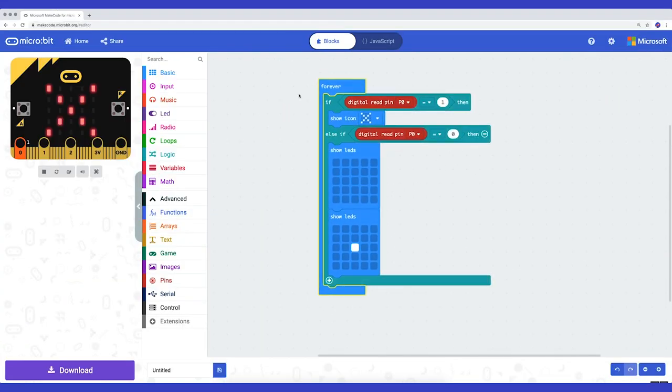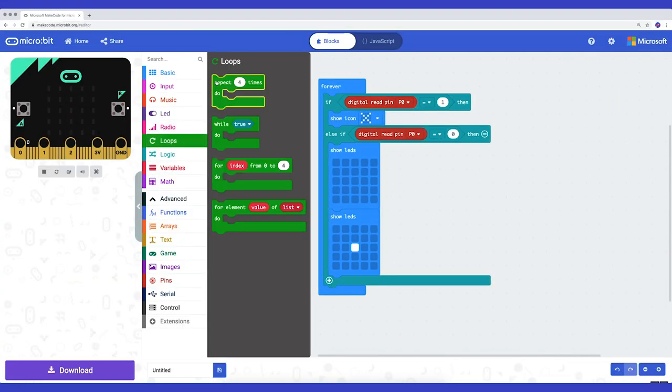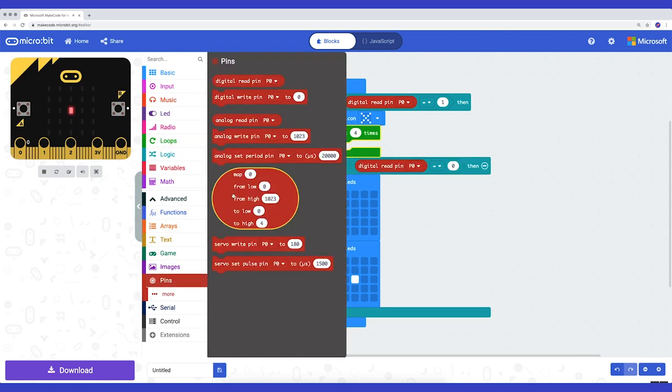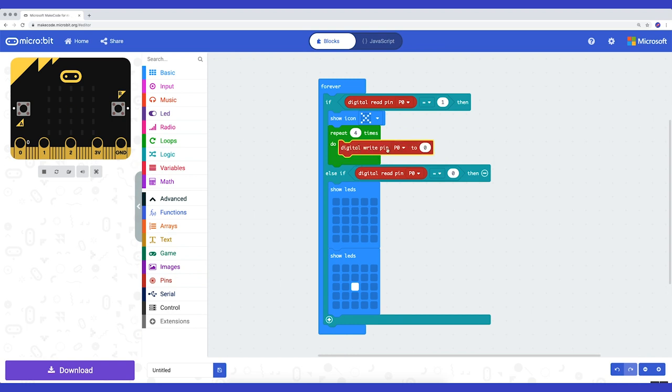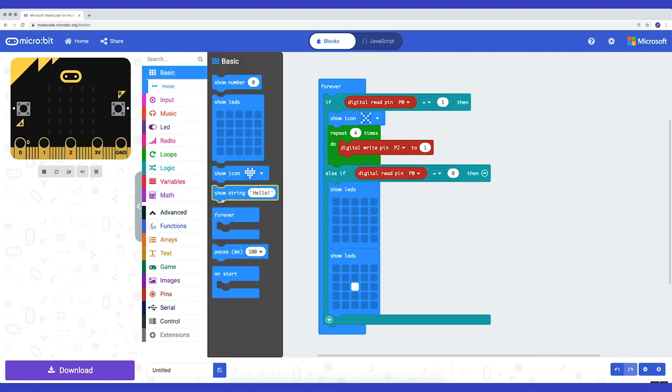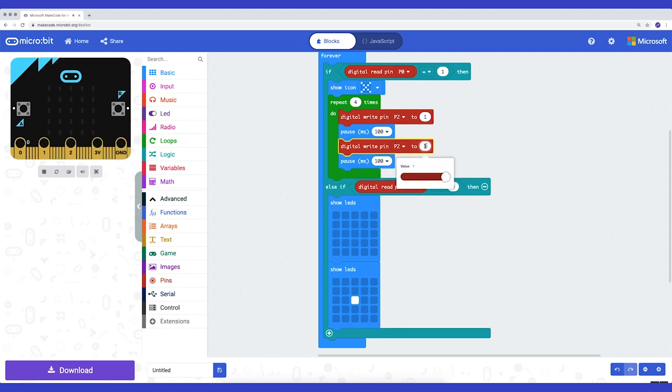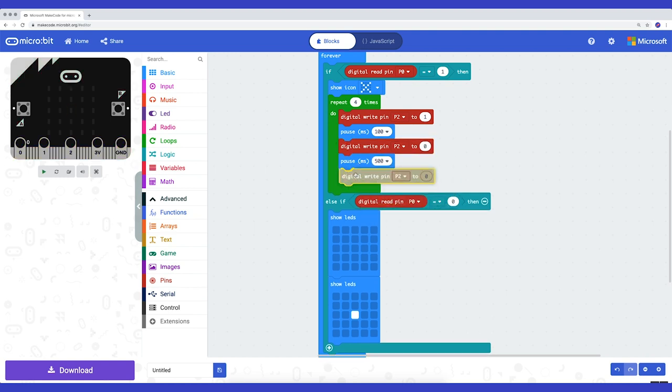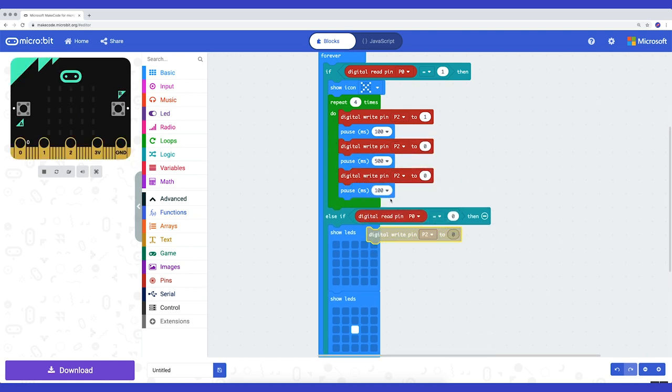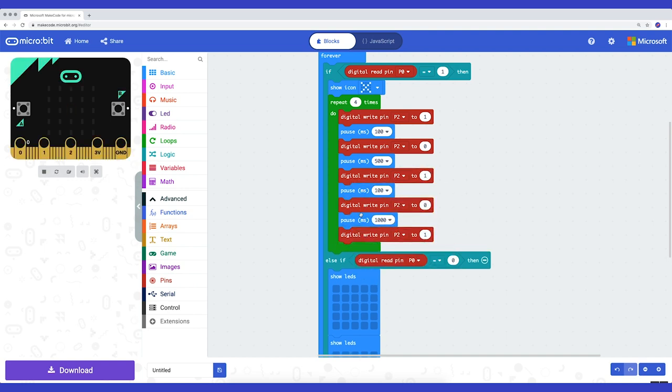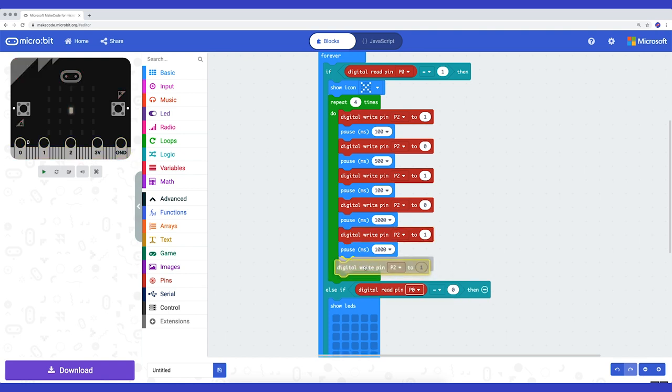But I also want to send a signal to the EL wire. For this I use PIN two. I add a loop. And then write DIGITAL PIN two to one, and pause 100 milliseconds. Now I continue to copy both blocks and alternately DO pass along the ONE and DON'T pass along the zero, the signal. By pausing every time, the EL wire will blink in a certain sequence.